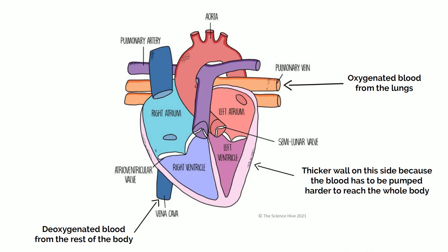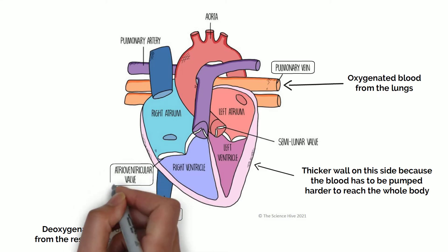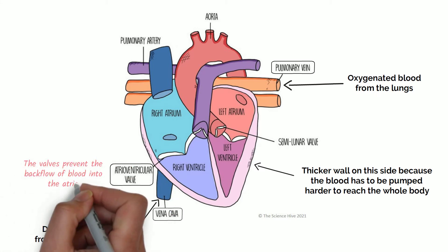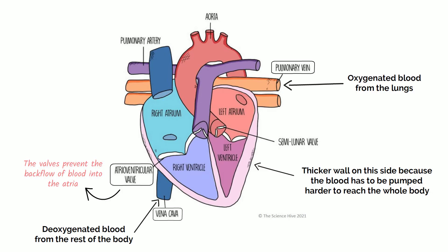The top chambers of the heart are the atria. These receive the blood supply through veins — the vena cava on the right and pulmonary vein on the left. Blood then passes through the atria into the ventricles through the atrioventricular valves, which prevent the backflow of blood into the atria. The ventricles then pass blood through the arteries, through the semilunar valves, which again prevent the backflow of blood into the ventricles. The heart muscle receives its own supply of blood through the coronary arteries, and blockage of these arteries can lead to a heart attack.